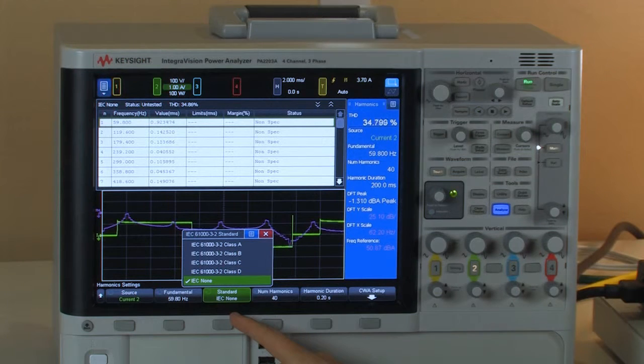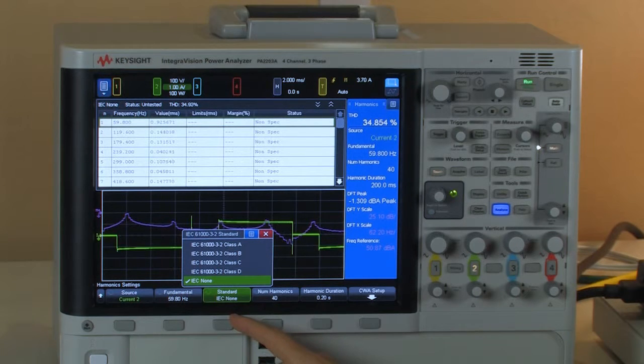Now there are four different classes of IEC standards. There's A, B, C, and D. And you should choose the class of test for the type of device that you're testing.